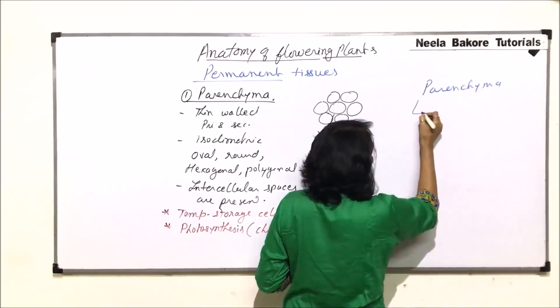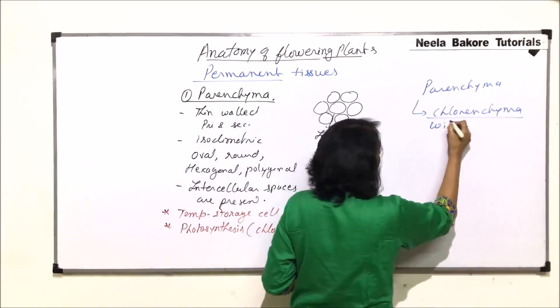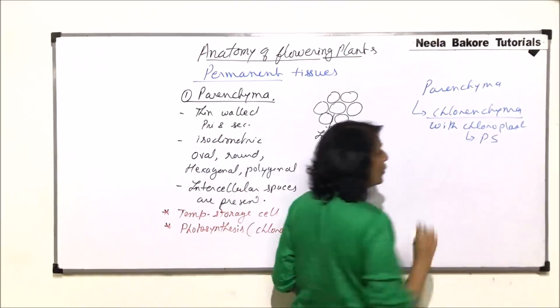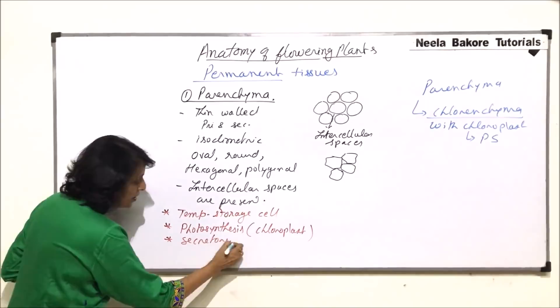Parenchyma can be divided into two types. Chlorenchyma is parenchyma where chloroplasts are present. With chloroplast comes the green pigment chlorophyll, so it will help in photosynthesis — that could also be the function. Another function is that parenchyma cells can act as secretory cells; secretory function is also seen in case of parenchyma.